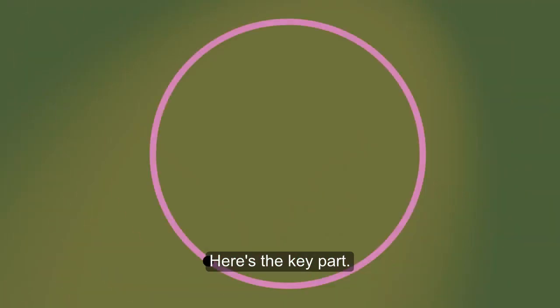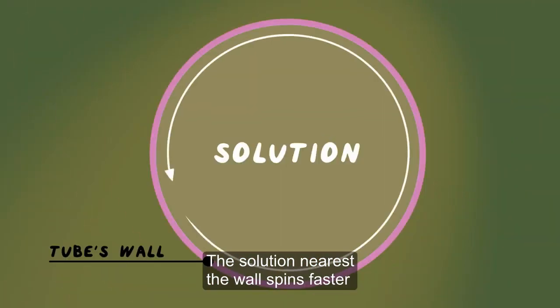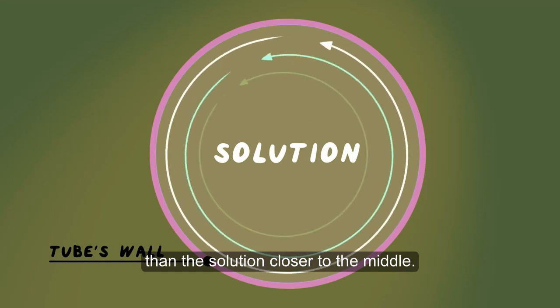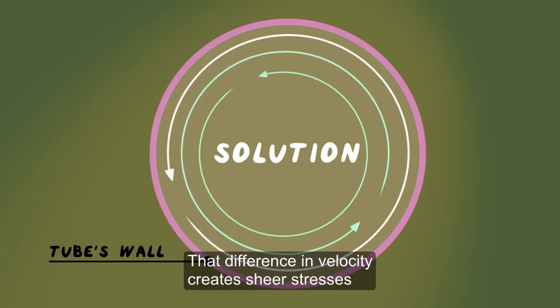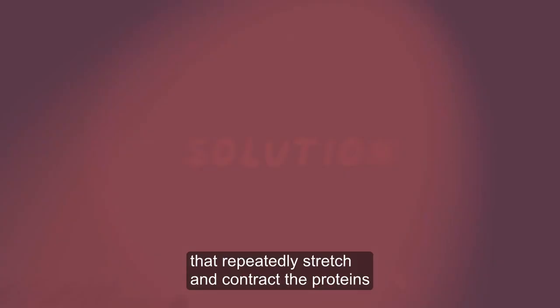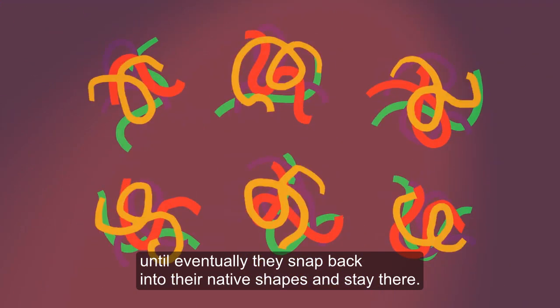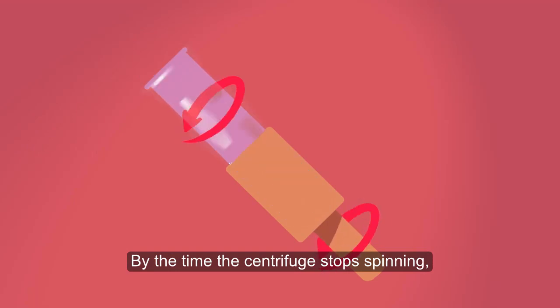Here's the key part. The solution nearest the wall spins faster than the solution closer to the middle. That difference in velocity creates sheer stresses that repeatedly stretch and contract the proteins, until eventually they snap back into their native shapes and stay there.